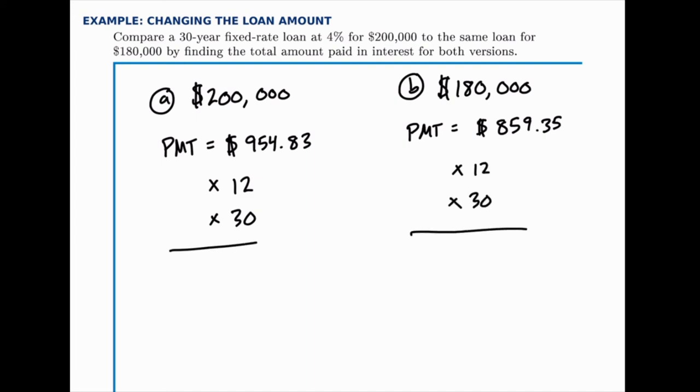So in the first example, the total you pay is $343,738.80. In the second example, the total paid is $309,366. We can already see the difference between these two.